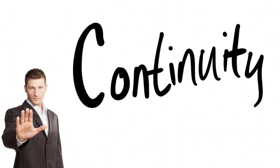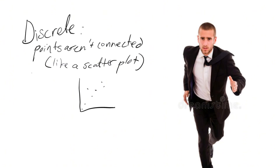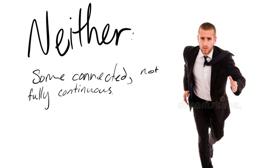Let's move on to continuity. A continuous graph is an unbroken line or curve. A discrete graph is like a scatter plot — the points are not connected. You may have a graph that is neither, where some points are connected but some are not.